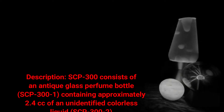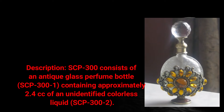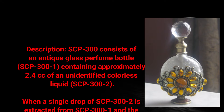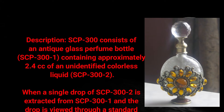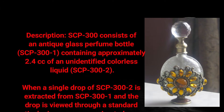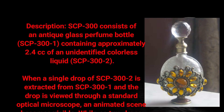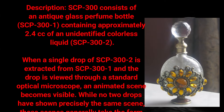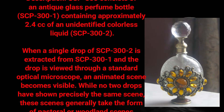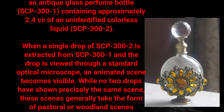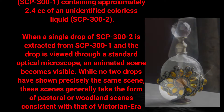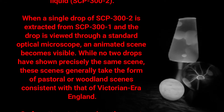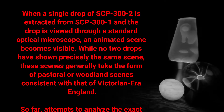Description: SCP-300 consists of an antique glass perfume bottle, SCP-300-1, containing approximately 2.4 cc of an unidentified colorless liquid, SCP-300-2. When a single drop of SCP-300-2 is extracted from SCP-300-1 and viewed through a standard optical microscope, an animated scene becomes visible. While no two drops have shown precisely the same scene, these scenes generally take the form of pastoral or woodland scenes.